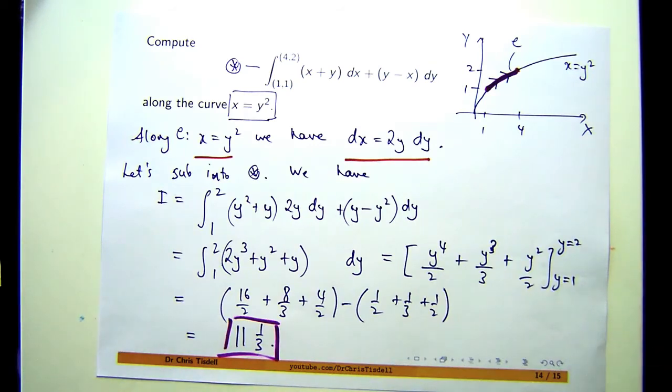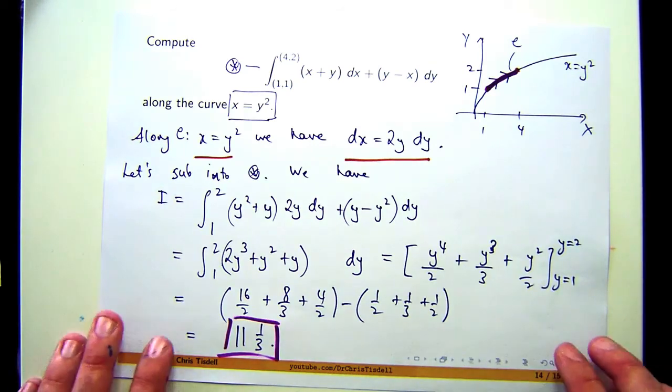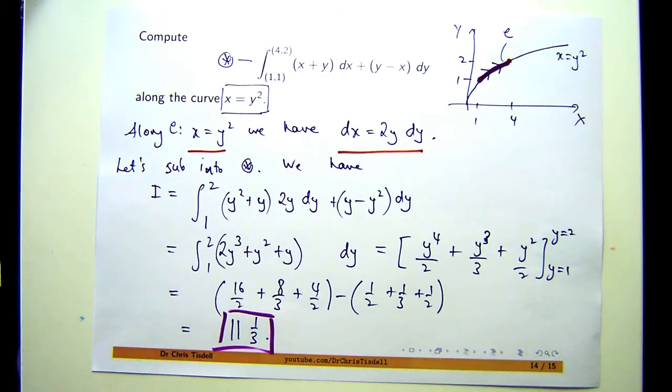So for that particular example, it looked a bit difficult, but all you're doing is you're integrating over a part of a curve in two-dimensional space. And the idea, from a computational point of view, is to break it down to something that you recognise and know. An integral involving functions of one variable.